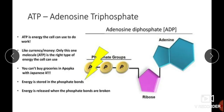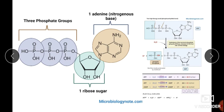ATP is energy that the cell can use to do work. It is also a currency for the cell. The energy is stored in phosphate bonds. In this representation, we can see the phosphate bonds where energy is stored, and this stored energy is released when those phosphate bonds are broken down.